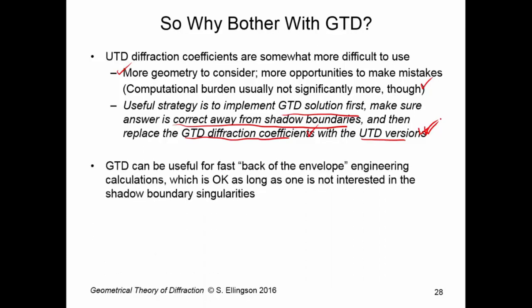Another reason for considering GTD, GTD can be used for fast back-of-the-envelope engineering calculations. And here I mean fast not in the computational sense, but in the sense of you as an engineer trying to get quickly an idea of how something works out. Well, GTD, the diffraction coefficient form, is relatively simple. So you can compute it with pencil and paper and a calculator relatively quickly. And that's okay as long as you're not interested in what's going on near the shadow boundaries. In fact, GTD gets used quite often in propagation problems where it is not common to be on a shadow boundary, for example. But that's just one example.